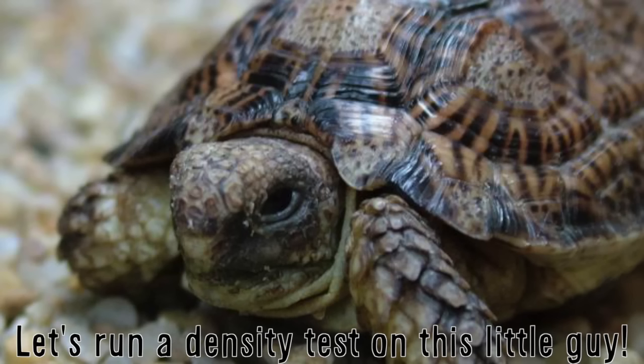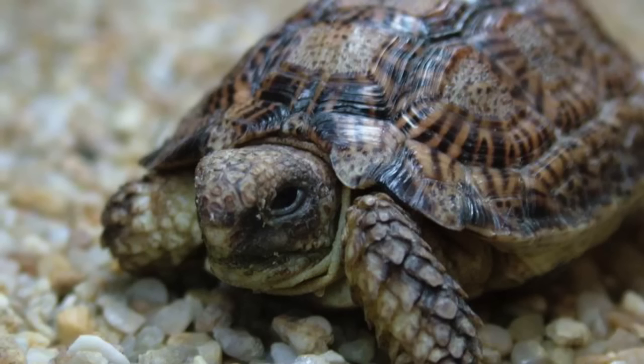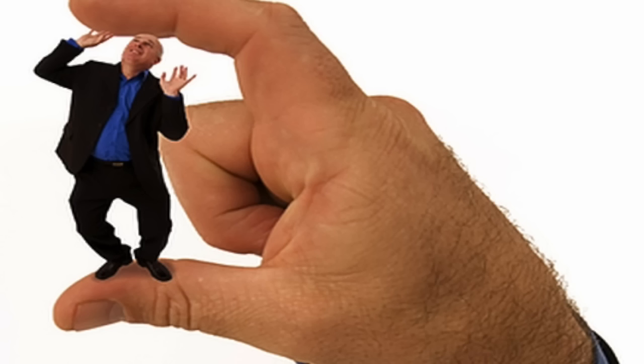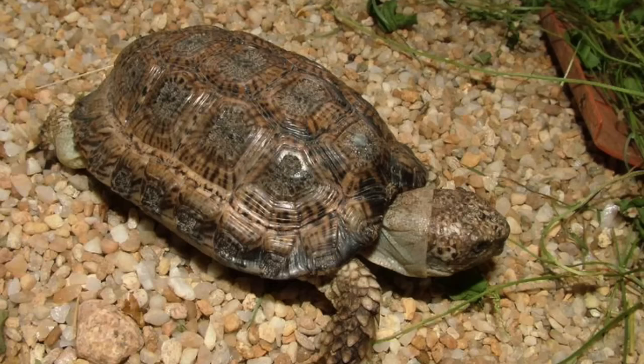Let's go with this little guy, the Homopus signatus. The internet says this tiny turtle weighs 127.5 grams and is only 7 centimeters long. That is tiny. That is the Earth's smallest turtle, after all.